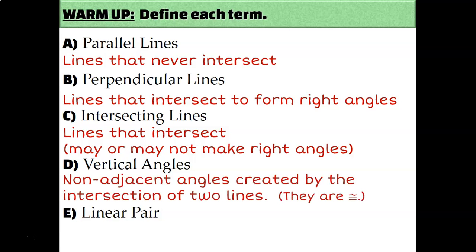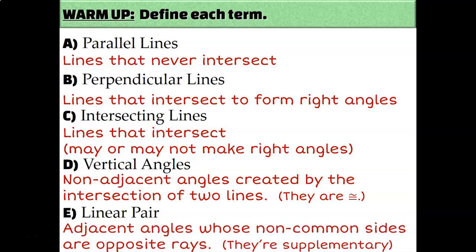Vertical angles are non-adjacent angles created by the intersection of two lines — that's their definition. By the vertical angles congruence theorem, we can say that they are congruent. Linear pairs are adjacent angles whose non-common sides are opposite rays. That's the definition of a linear pair, and by the linear pair postulate, we can say that they are supplementary. All five of these vocab terms are going to be very important for the entire unit and for what we are doing today.